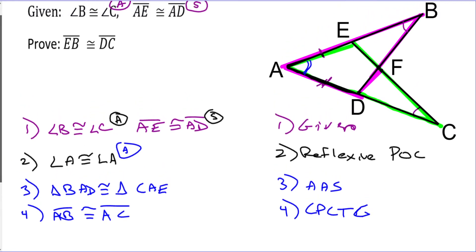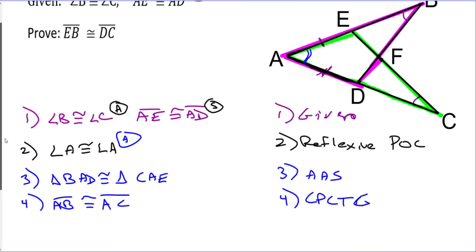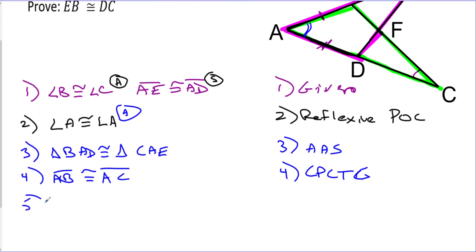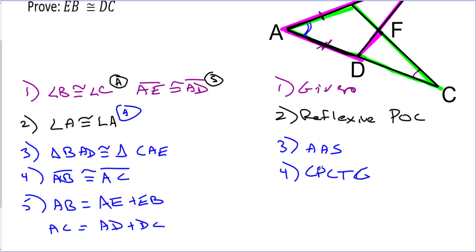I'd like to know about EB. Step five: AB is equal to AE plus EB. And in the same way, AC is made up of two parts — it's made up of AD and DC. This is what's called the segment addition postulate — I'll write SAP. So here's what I'm trying to do: I would like to prove that EB is congruent to DC.